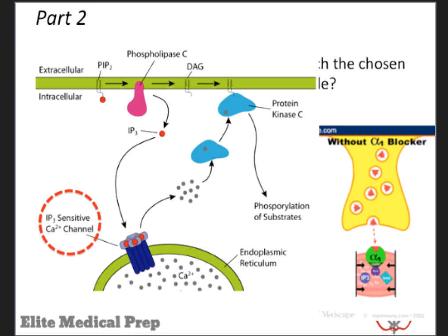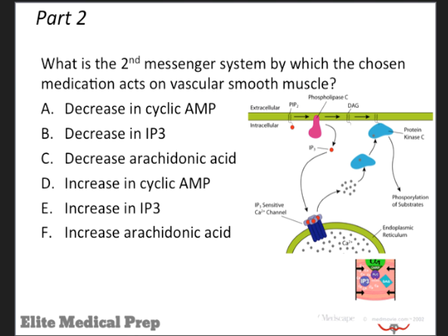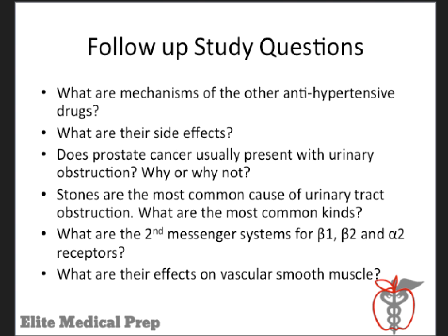IP3 results in downstream release of intracellular calcium stores and activates protein kinase C, leading to a host of important intracellular changes. Calcium is tightly regulated in the cell, and any small changes can have important effects on multiple functions. Because terazosin is blocking the alpha-1 receptor, there will be a concomitant decrease in levels of IP3. Hence, the answer to our question here is B. We've successfully answered both parts of our two-part question. The key to great USMLE preparation is learning all the angles of high-yield questions, such as the ones listed on the slide — we'll let you peruse these on your own.